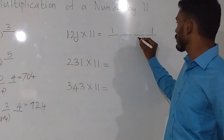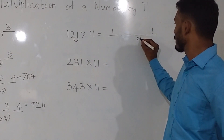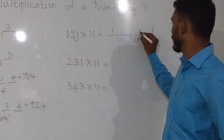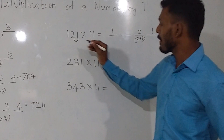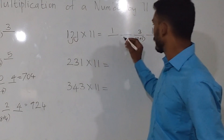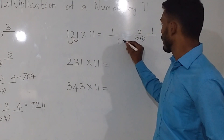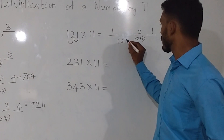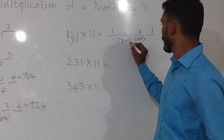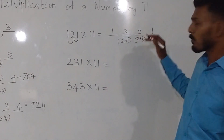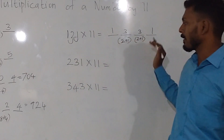The first two numbers add: that is 2 plus 1, which is 3. If we look at this number, we will add this number — that is 2 plus 1, this is 3. The answer is 1, 3, 3, 1.